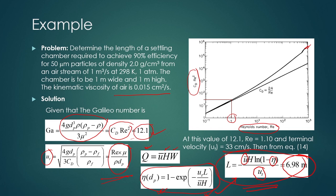To summarize the solution: first calculate the Galileo number; from the Galileo number and the graph, calculate the Reynolds number; from the Reynolds number calculate the terminal velocity; and from the given values of Q, H, and W, calculate the average velocity. Once average velocity u_bar, terminal velocity ut, and height H are known, calculate the length of the chamber from the efficiency equation. The final answer is 6.98 meters.